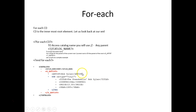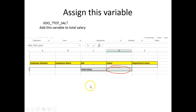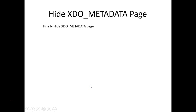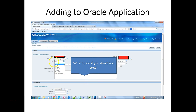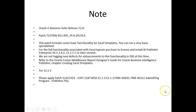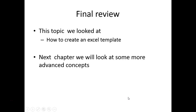For each element, we are looking at the parent. Slash slash catalog name would give you the parent catalog name from anywhere — basically it searches for any catalog name. Dot dot artist would give you the artist of the current parent. After assigning this variable, do a quick test and hide the XDO metadata. You can of course add colors, freeze the top rows, and other formatting. In this chapter, my goal was to help you leverage XDO metadata to create a new variable.